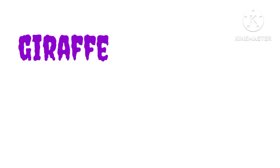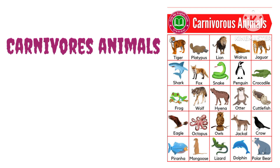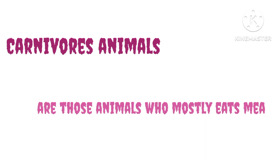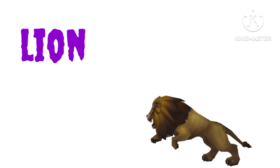Giraffe — G-I-R-A-F-F-E — giraffe. Let's start with carnivorous animals. They are those animals who mostly eat meat. Tiger — T-I-G-E-R — tiger means sher. Lion — L-I-O-N — lion means sher.